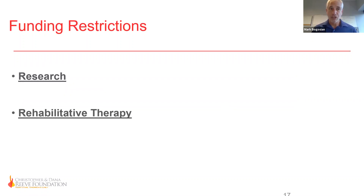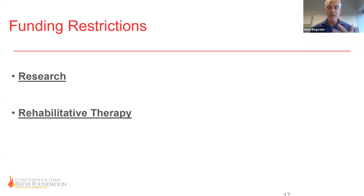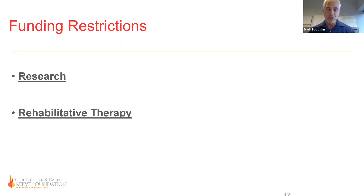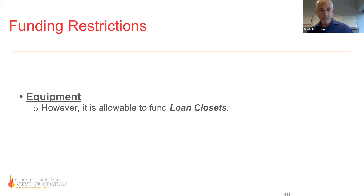The two big areas we cannot fund are research under any circumstance or rehabilitative therapy. However, programs that help people living with paralysis to participate in exercise opportunities are allowable. Programs that use a physical or occupational therapist working directly with people with paralysis are considered rehabilitative therapy. The opposite would be exercise opportunities facilitated by someone with, for example, a bachelor's degree in exercise science or a certified fitness instructor — that would be an allowable expense.